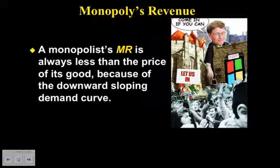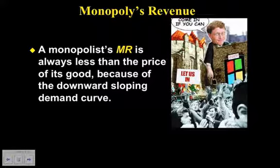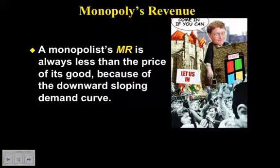Looking at monopoly revenue: the marginal revenue curve for perfect competition was perfectly elastic, and firms were price takers. Whereas in a monopoly, the marginal revenue curve is downward sloping, because they are actually price makers. So the marginal revenue curve is always less than the price, and the demand curve is the price, so MR is always going to be less than the demand curve.